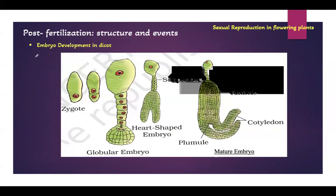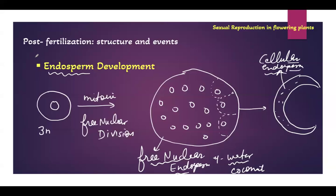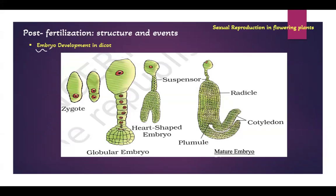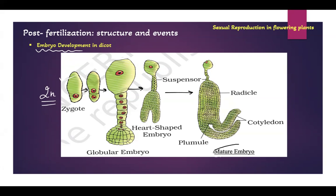Endosperm development or formation starts just before the formation of the embryo, because endosperm will be a nutritive tissue for the developing embryo. Embryo development starts from the zygote, which is a single diploid cell. This cell will undergo many mitotic divisions and finally form a complete mature embryo.